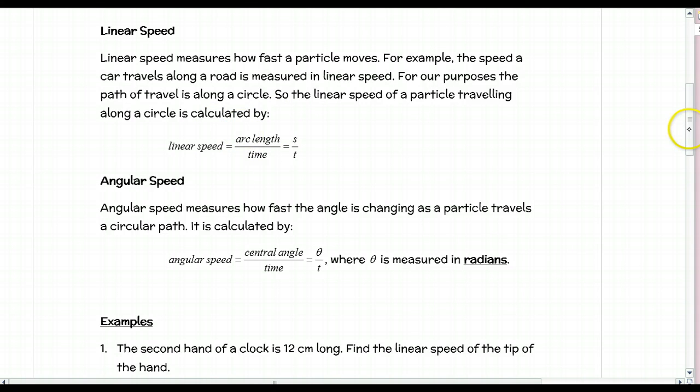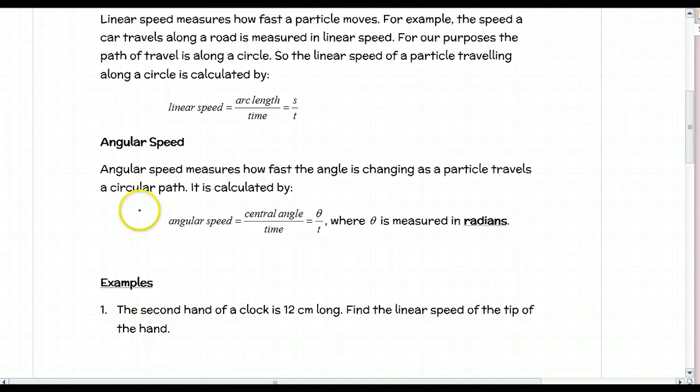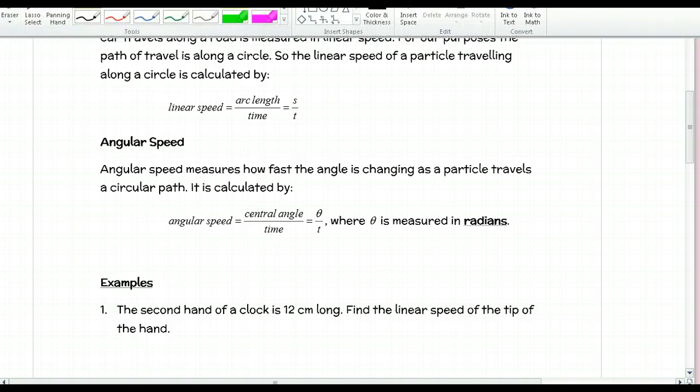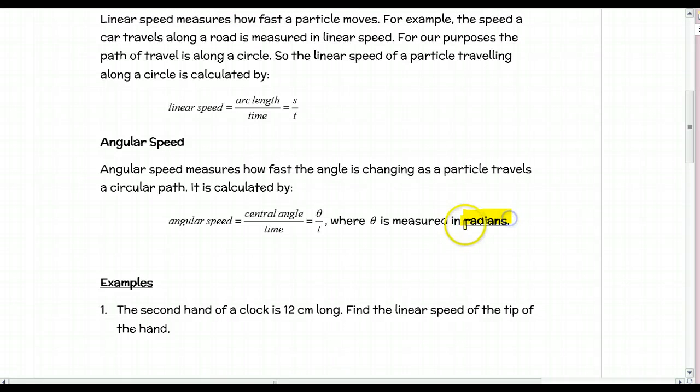Angular speed measures how fast the angle is changing as the particle travels the circular path. Angular speed is the central angle divided by time. Again, theta is measured in radians. If you're given an angle in degrees, convert it to radians to use these formulas.